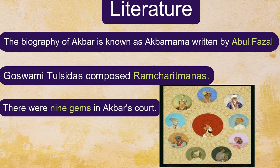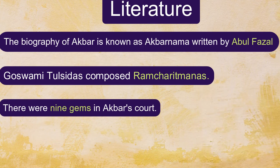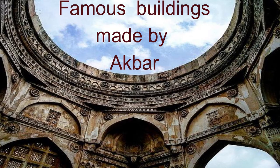These scholars were called Navratnas, and Tansen was one of them. Akbar was illiterate, but he had extraordinary knowledge in almost every subject, and it is said that he had a very sharp memory. Whatever he heard once, he never forgot.